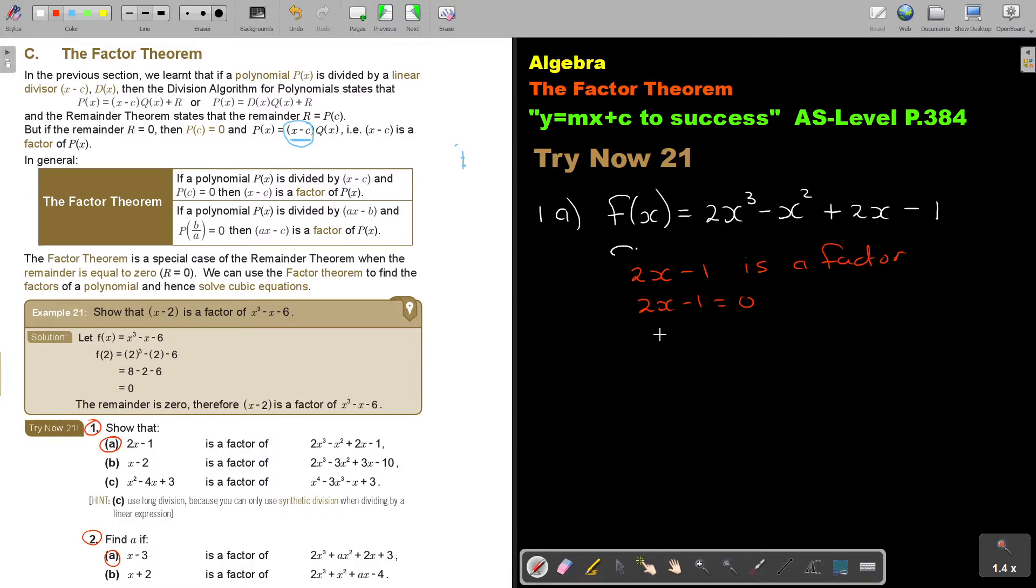but then don't forget that I'm sitting with 2x minus 1 is factor to prove. So, take this 2x minus 1, put it equal to 0. So, I get that x is a half. Then, I'm going to substitute that half.